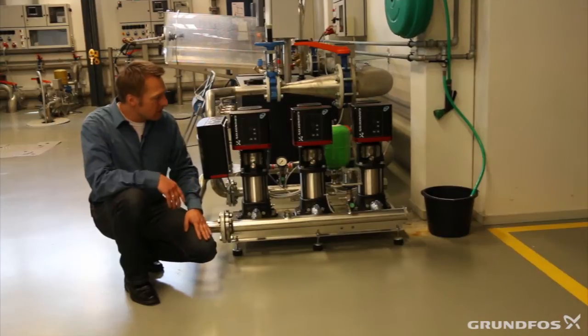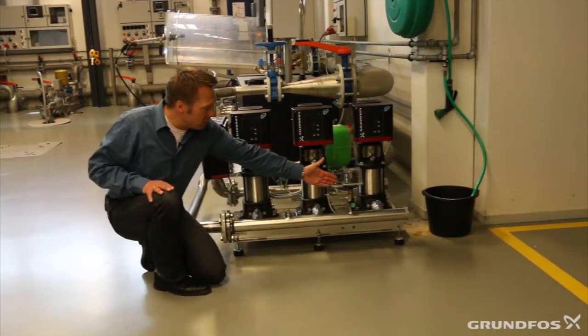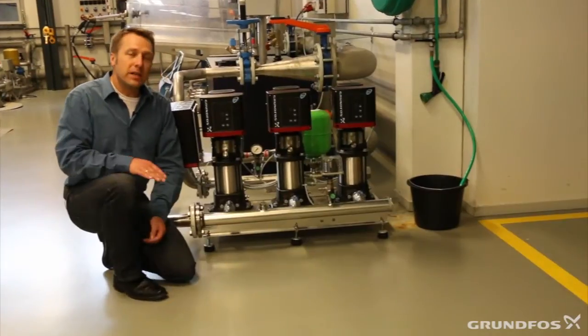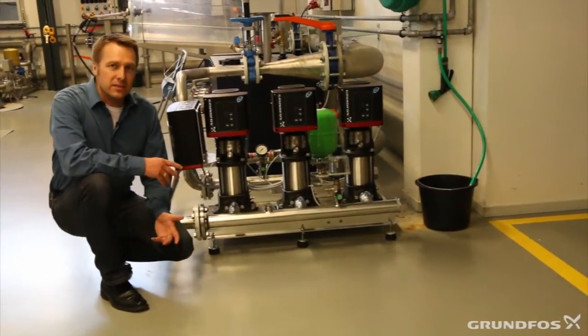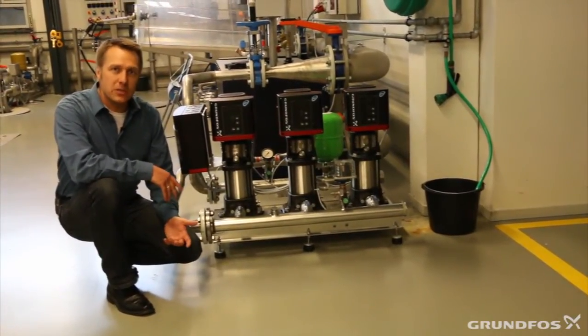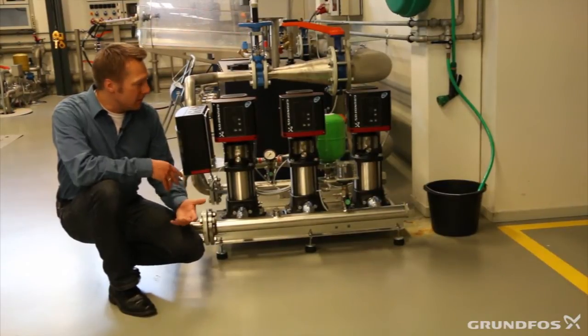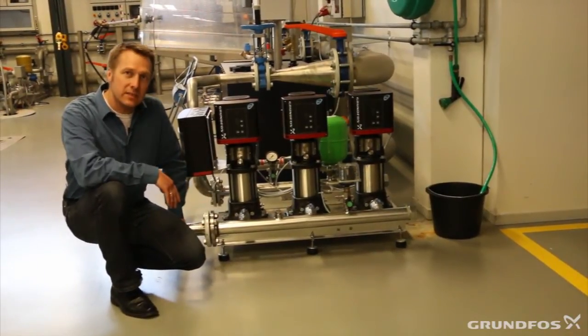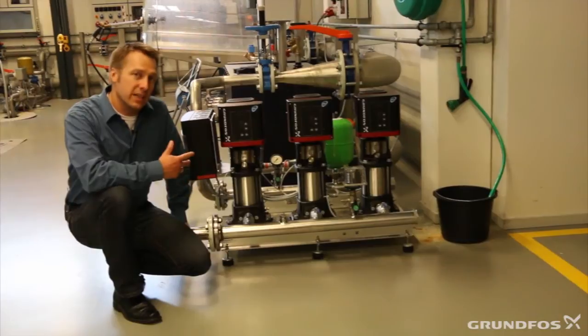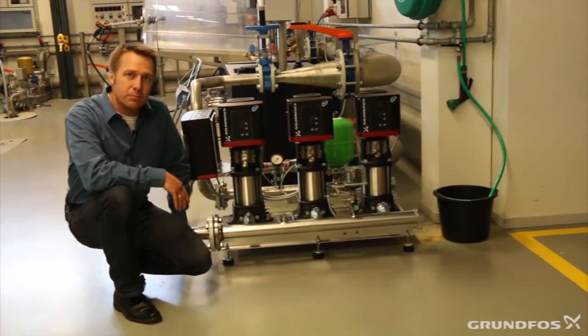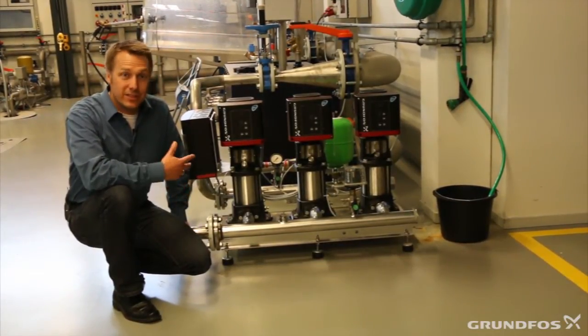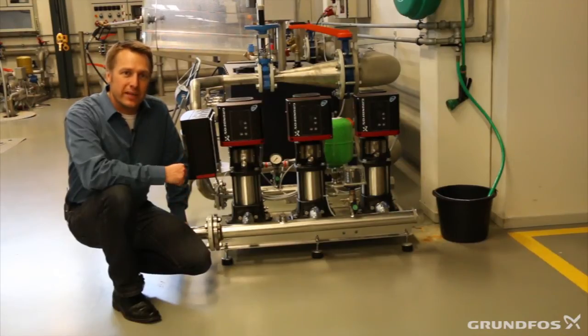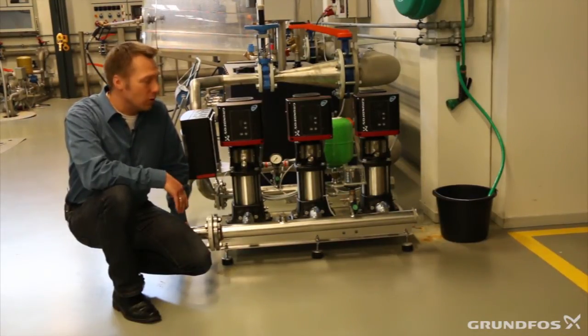Then what we can also see mounted to the manifold is this. This is the dry running protection. It is a simple pressure switch, which will switch off all the pumps if the pressure from the main side is insufficient. This gives us the idea that there is no water in the pipes and this leads to the assumption that the pumps might run dry and to protect them from breaking, we will just switch off the whole boosting system.